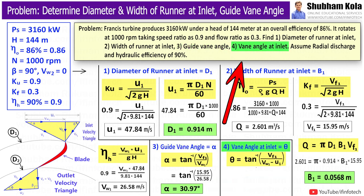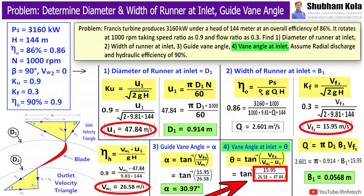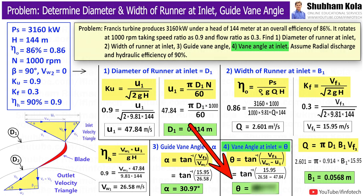Now, next we need to calculate for vane angle at inlet, that is θ. So, here we have all the values. And by taking tan inverse, we will solve for the value of vane angle at inlet, that is θ.